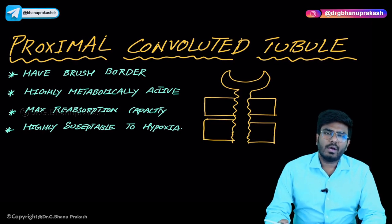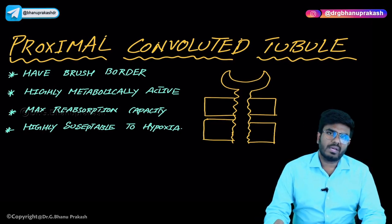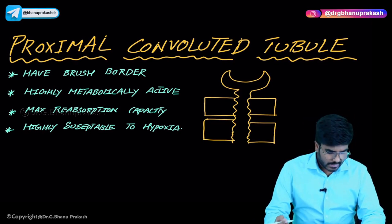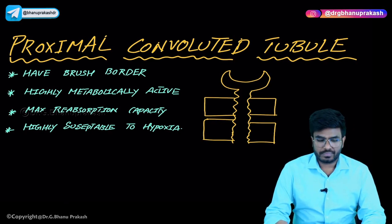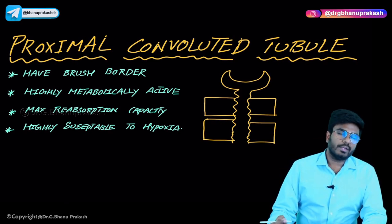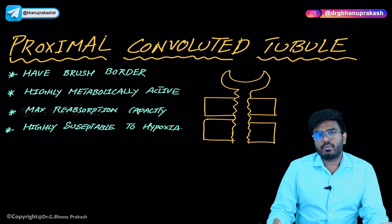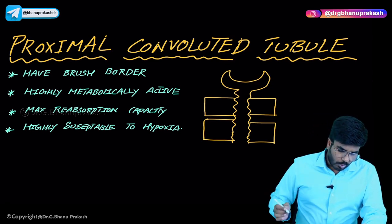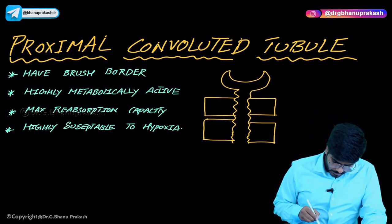Welcome back. After discussing GFR and its autoregulation, let's now talk about the first part of the nephron, which is the proximal convoluted tubule (PCT). Right after Bowman's capsule, we have the proximal convoluted tubule.